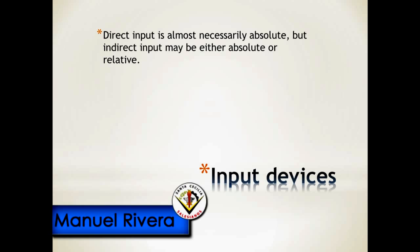Direct input is almost necessarily absolute, but indirect input may be either absolute or relative. For example, digitizing graphics tablets that do not have an embedded screen involve indirect input and sense absolute position, but may also be set up to simulate a relative input mode where the stylus or puck can be lifted and repositioned.